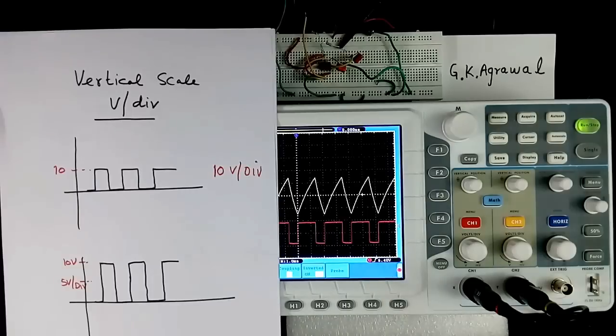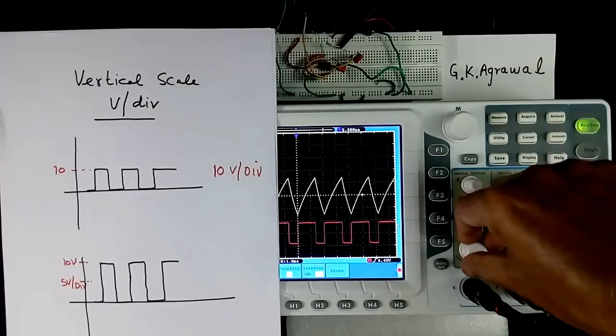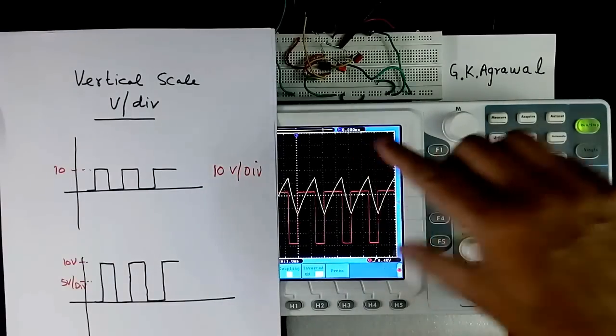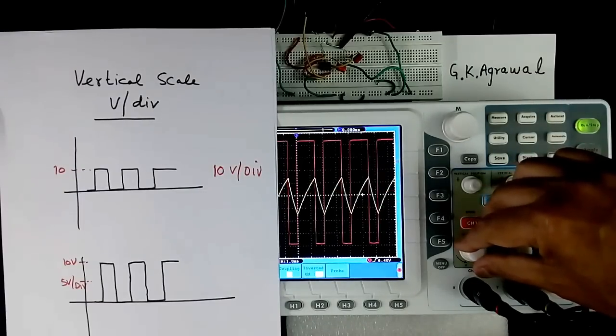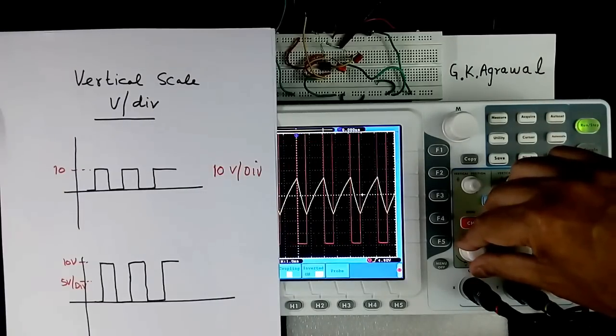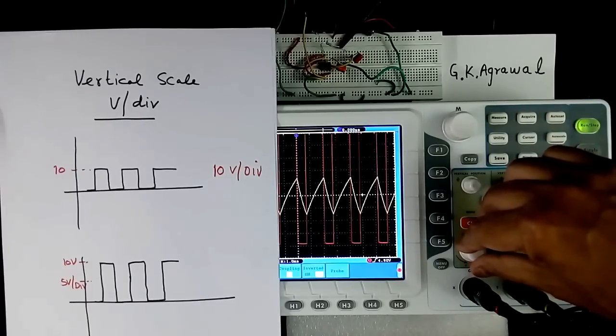Here I will show. This red color. If I change the scale, its height will increase. Signal is same. It is visible bigger. Further increase. If it goes more, it may go out of range.